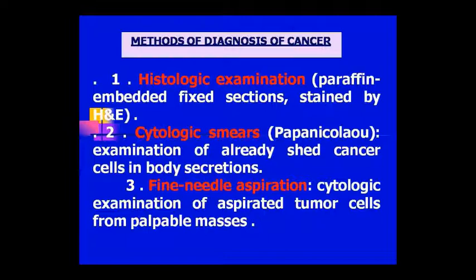First of all, histological examination. What is the procedure? We study the tissue. We make a paraffin embedded fixed section. First, you take a tissue sample from the body, then make a paraffin embedded fixed section, stain the tissue, and after staining you observe the tissue under the microscope. If the tissue appears cancerous, we call it histological examination.